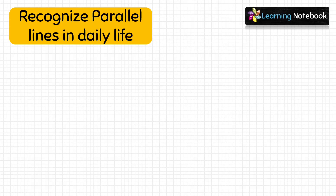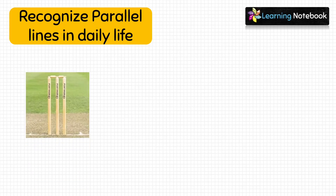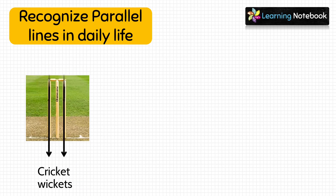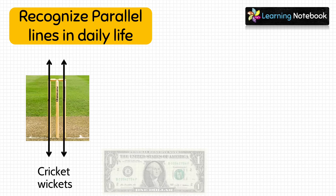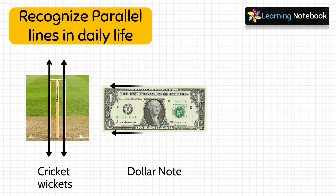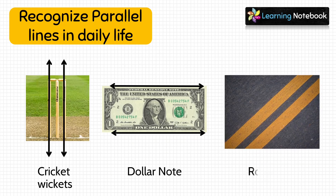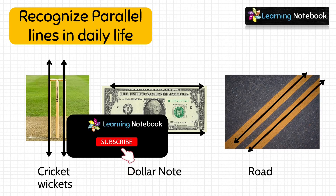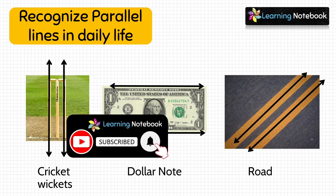We can also recognize parallel lines in daily life — like in cricket wickets, on a currency note, and on road lines.